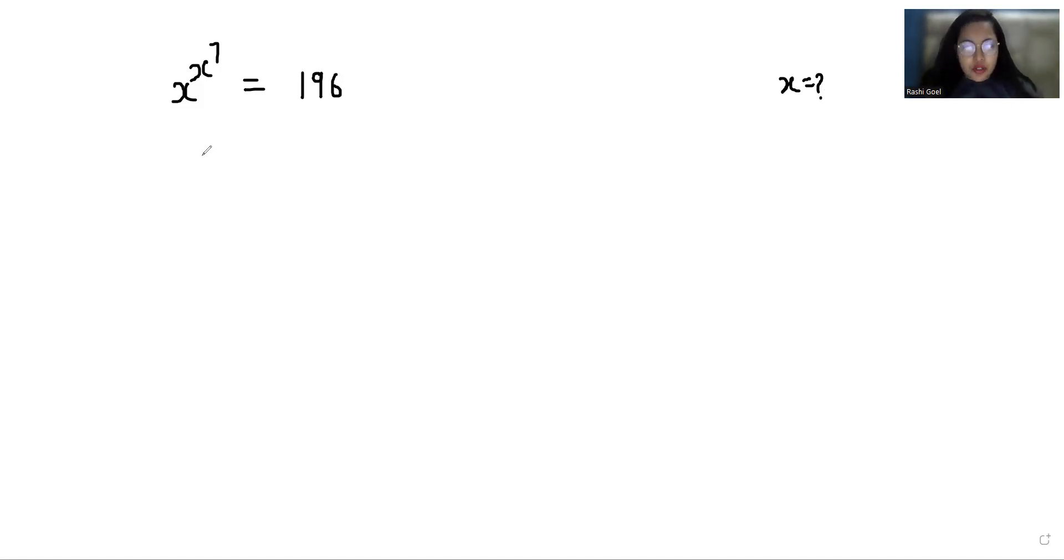We can write x power x power 7 equals 196. I can take whole power 7 to both sides. Now according to exponent rule, a power m power n equals a power mn, or a power n power m.